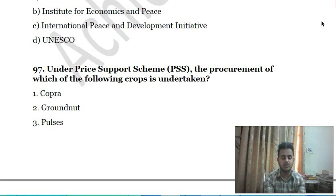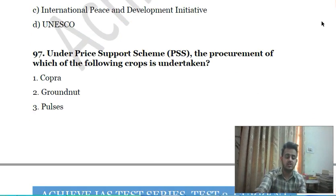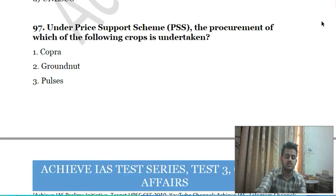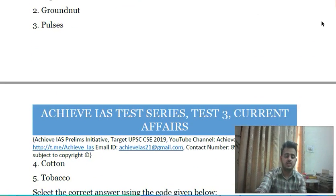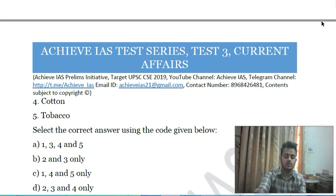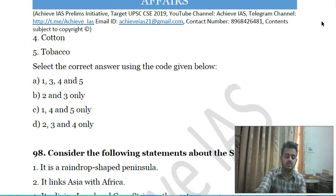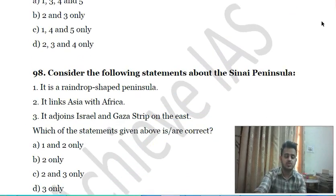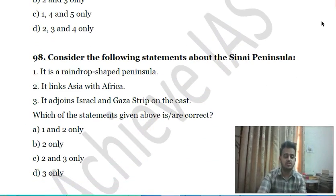Ninety-sixth question: under the Price Support Scheme, the procurement of which of the following crops is undertaken? First, copra; second, groundnut; third, pulses; fourth, cotton and tobacco. Choose the correct answer.